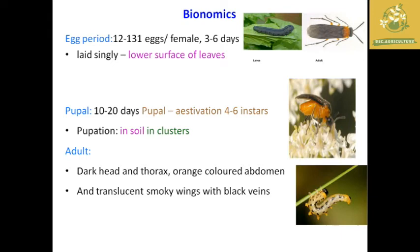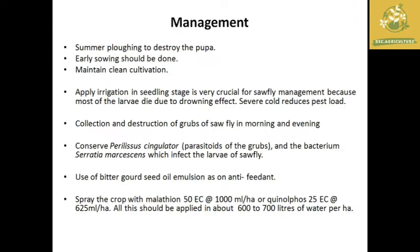Management for mustard sawfly includes summer plowing to destroy pupae, early sowing to help the plant escape damage, and collection and destruction of grubs in the morning and evening. Bitter gourd seed oil emulsion can be used as an antifeedant. Chemical sprays include malathion 50 EC at 1000 ml per hectare or quinalphos 25 EC at 625 ml per hectare in 600 to 700 liters of water.